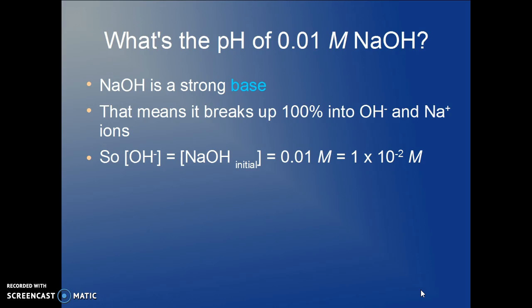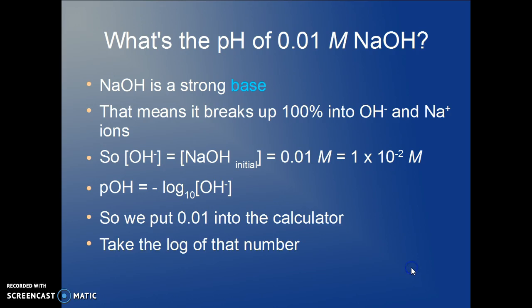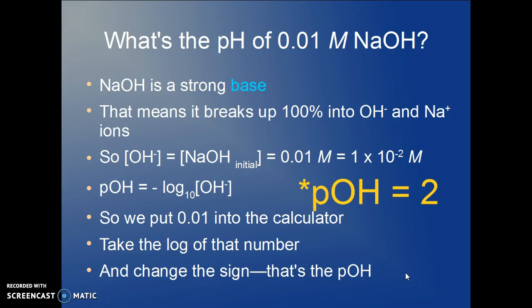The pOH now is what we're solving for because we're over on the right side of the pH scale. We're solving for pOH. And we put the 0.01 into the calculator with the log and change the sign. And the pOH is 2.